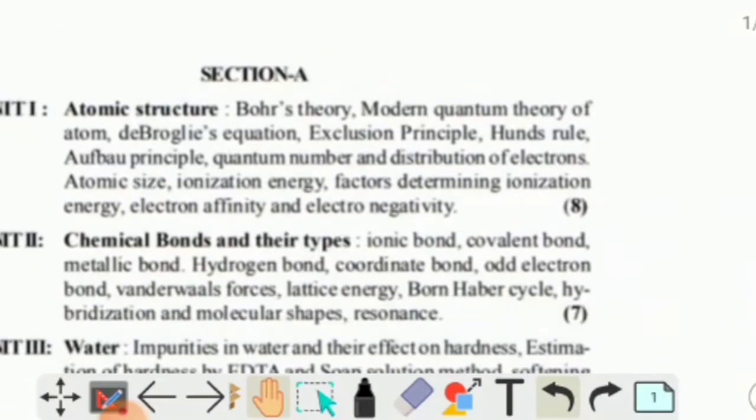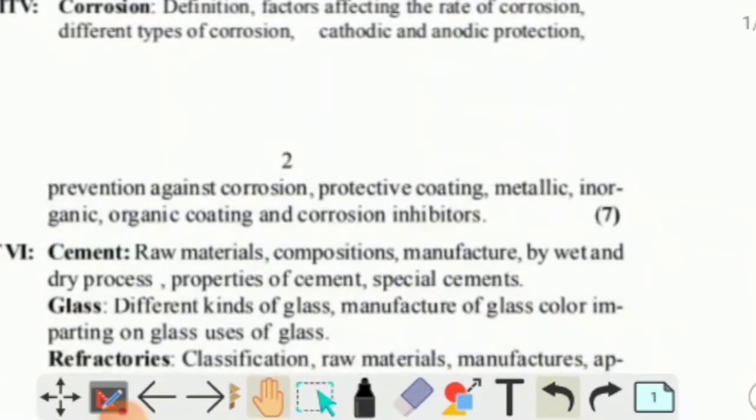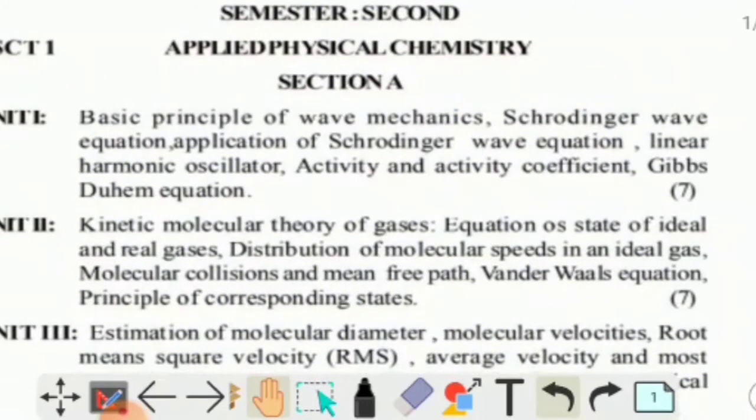Now semester two covers Applied Physical Chemistry. Section A, Unit 1 includes basic principles of wave mechanics, Schrodinger wave equation, application of Schrodinger wave equation, linear harmonic oscillator, activity and activity coefficient, and Gibbs-Duhem equation.